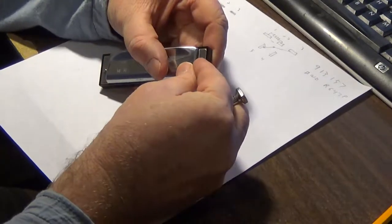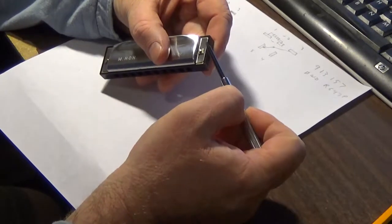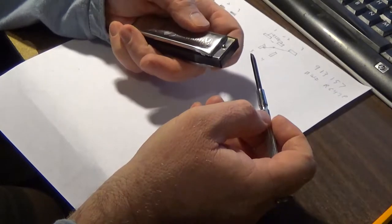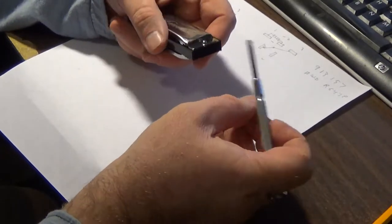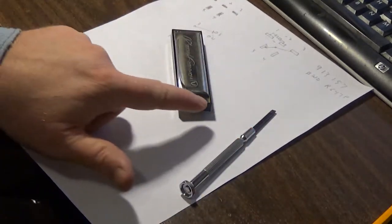And you can loosen it up and kind of square that up a little bit and make it nicer. But that's basically how you get it on. So I hope that makes sense and helps you out there if you're having trouble getting those side screws in.